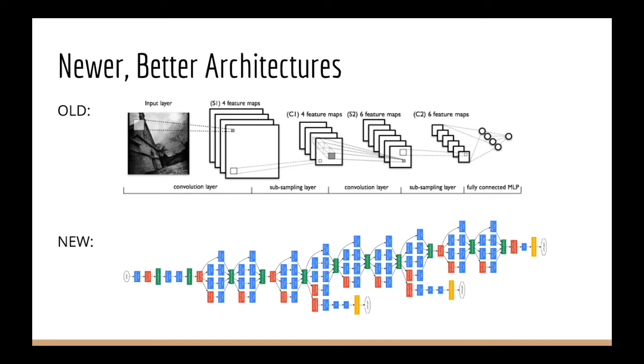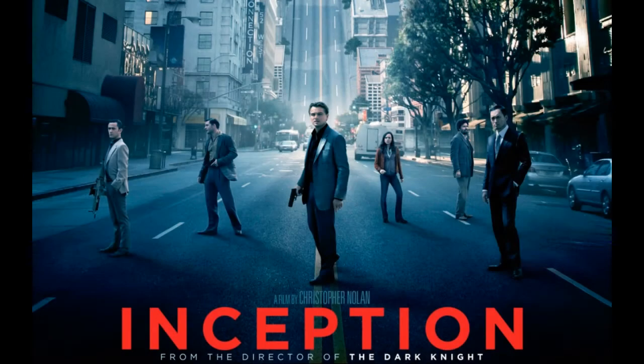First, we're going to bridge the gap between the basic CNN architecture you already know and love to modern, novel architectures such as VGG, ResNet, and Inception, which as you might have guessed, is named after the movie.